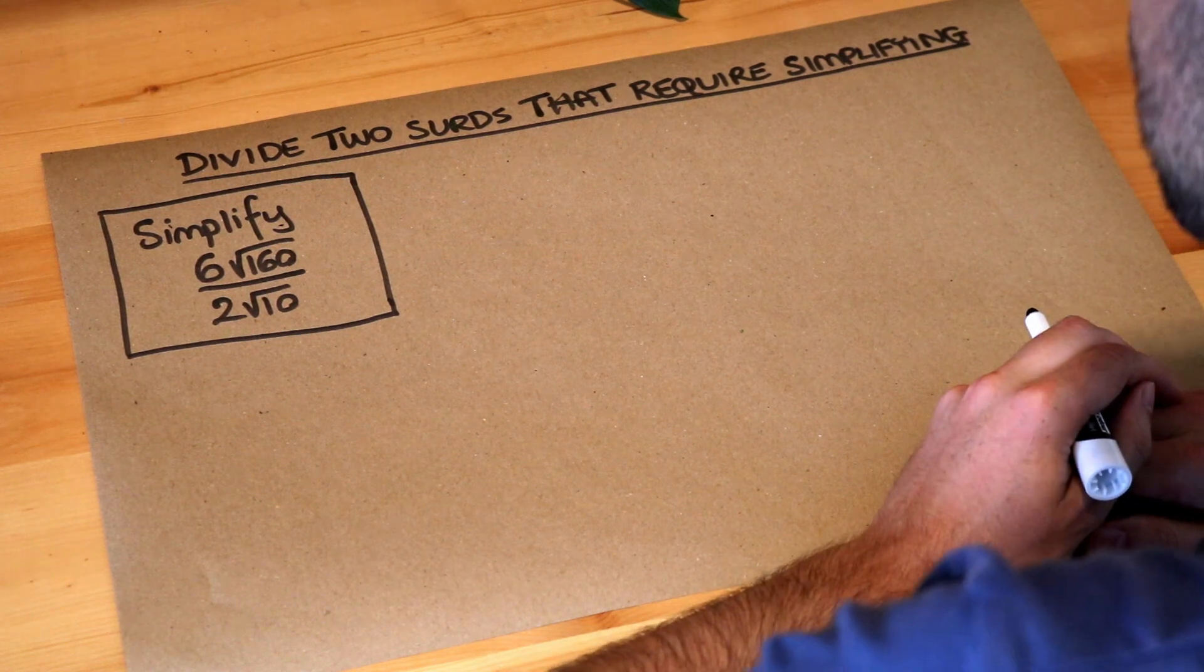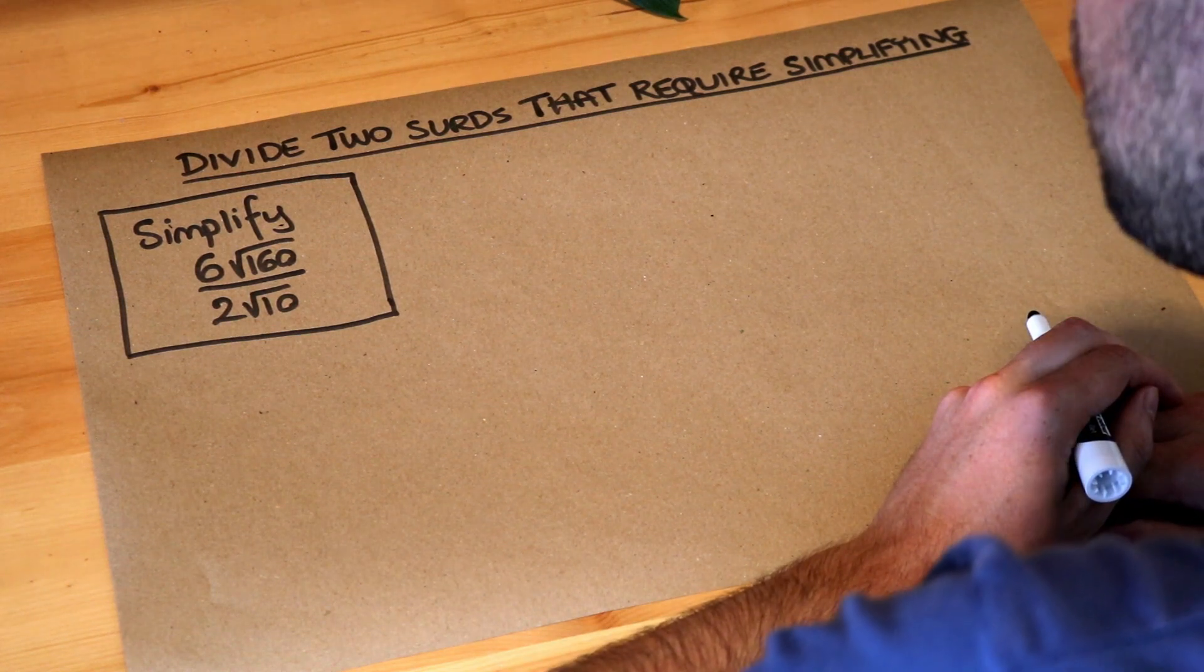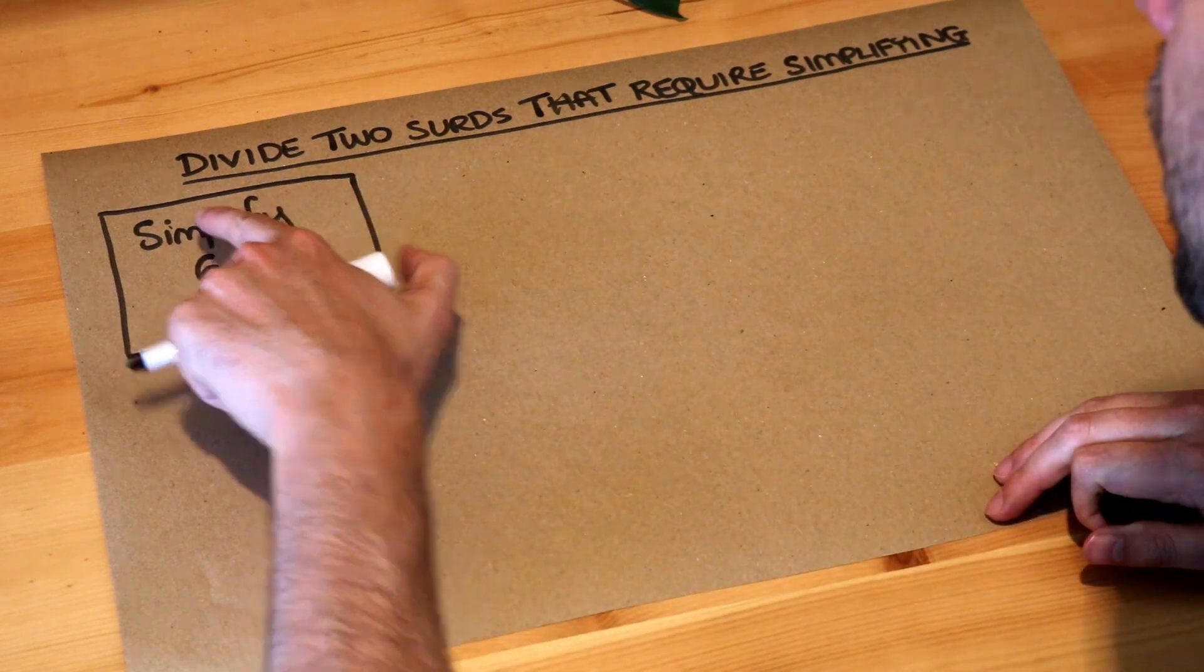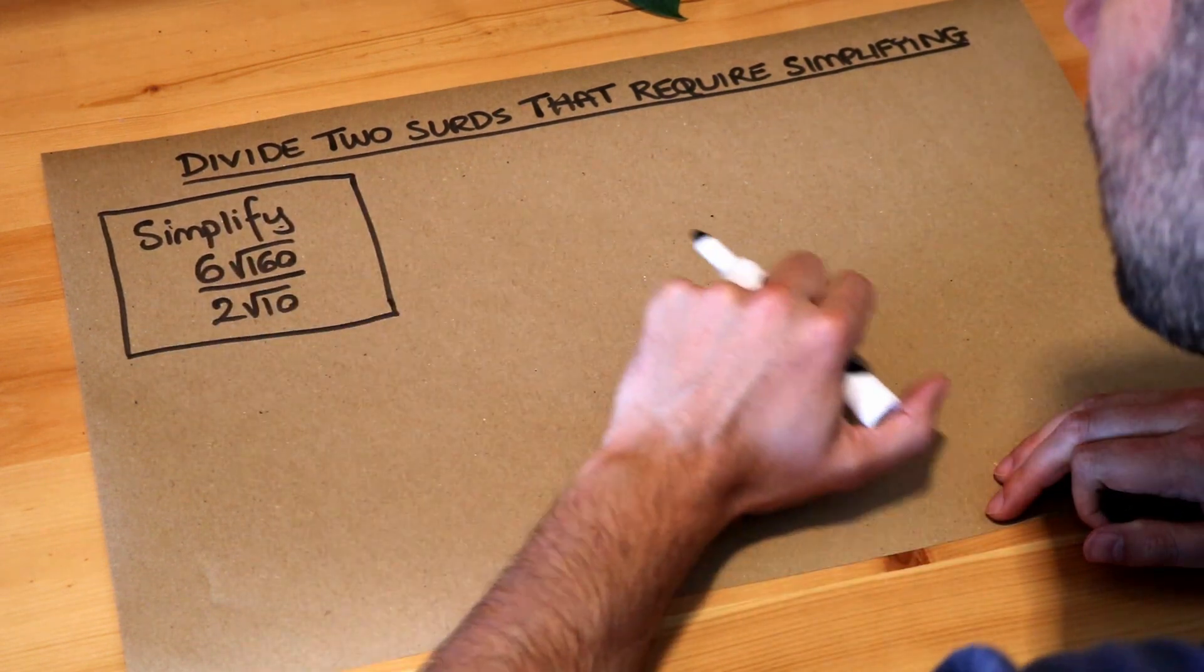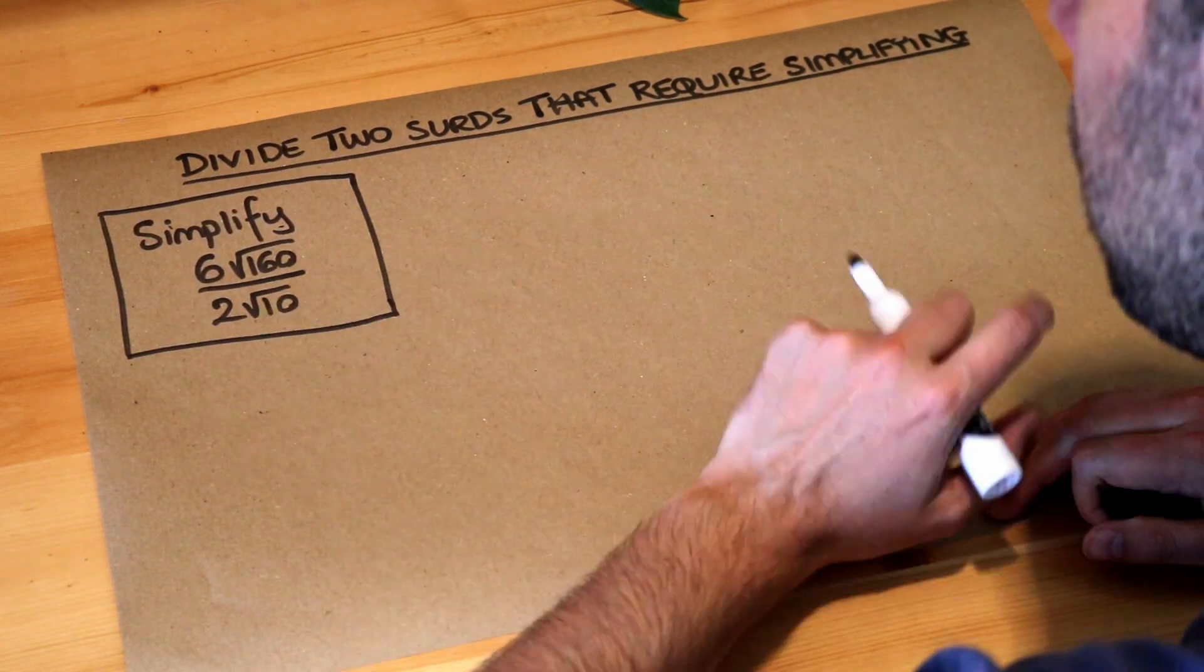Hello and welcome to this Dr. Frost video on dividing two surds that require simplifying. So we want to simplify 6 root 160 over 2 root 10.